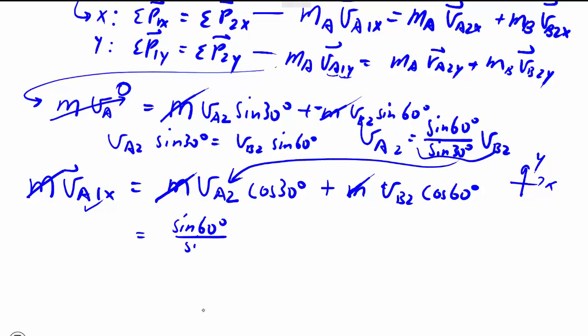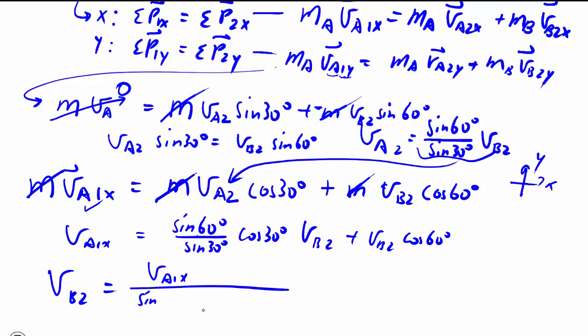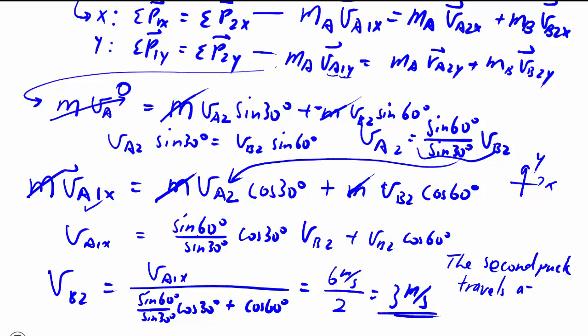So all we're left with is VB2. So we can basically factor out VB2 and divide all this things underneath. Which conveniently works out to be a perfect two underneath. So we have three meters per second. And that's what we're after in part A. So after the collision, the second puck gets traveling at three meters per second.